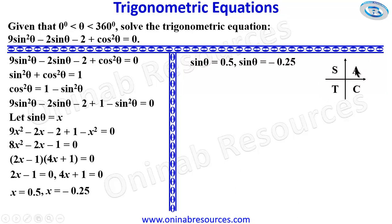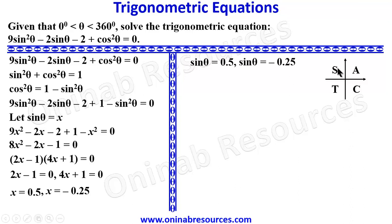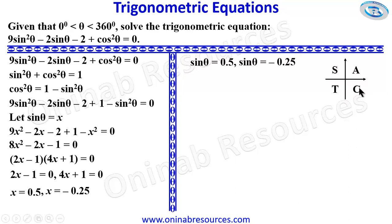In the first quadrant, sine, cosine, and tangent of acute angles are all positive. In the second quadrant, only sine is positive, where the angle is between 90° and 180°. In the third quadrant, only tangent is positive, where θ is between 180° and 270°. In the fourth quadrant, only cosine is positive, where θ is between 270° and 360°.